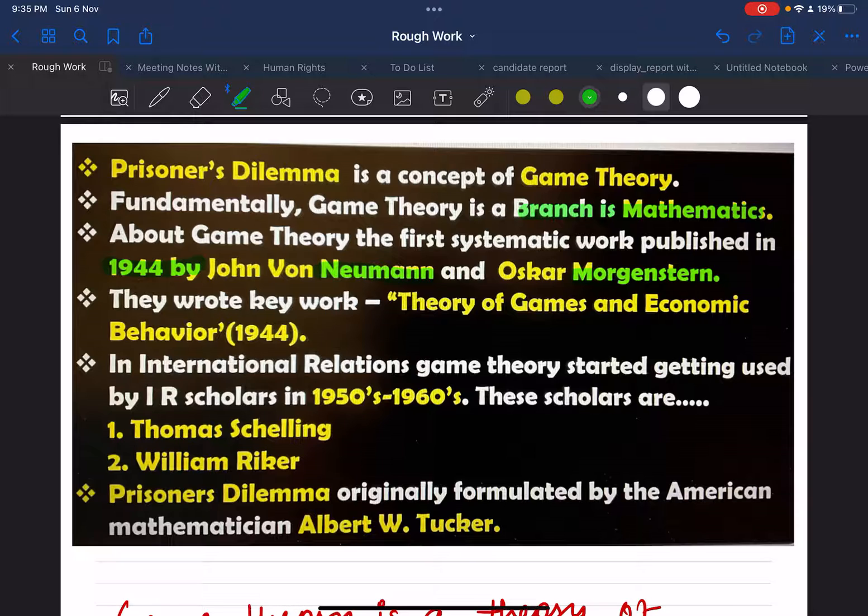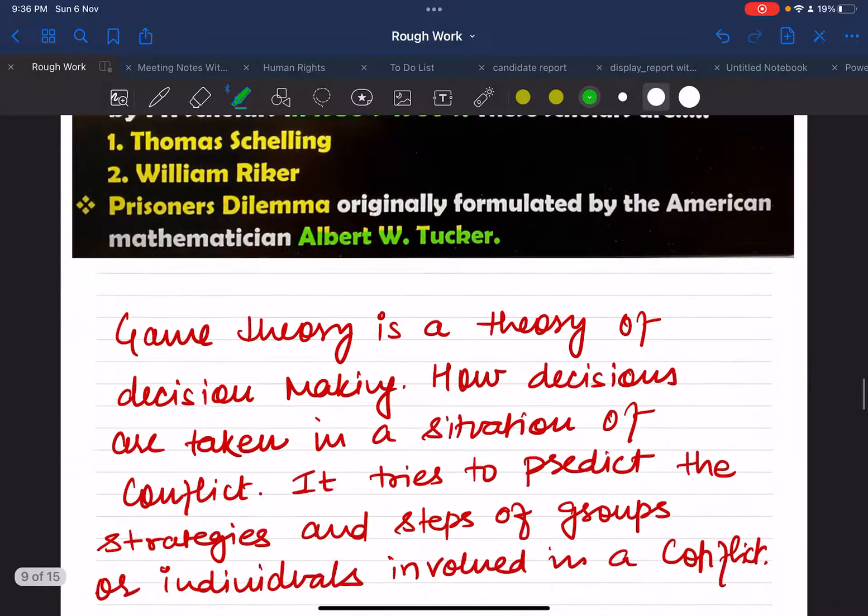In international relations, game theory started getting used by IR scholars in the 1950s to 1960s. These scholars are Thomas Schelling and William Riker. Prisoner's Dilemma was originally formulated by the American mathematician Albert W. Tucker.